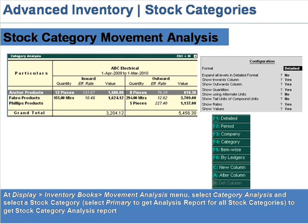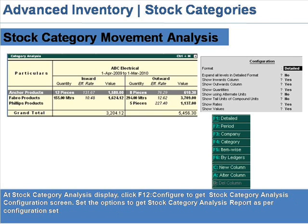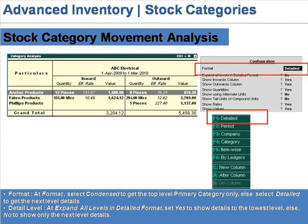To get the Stock Category Analysis report, at the Stock Category Analysis display, click F12 Configure to get the Stock Category Analysis configuration screen. Set the options to get the report as per configuration. At Format, select Condensed to get top-level primary category only.